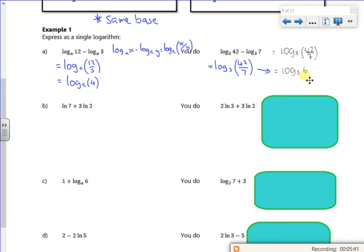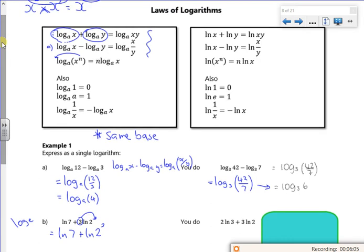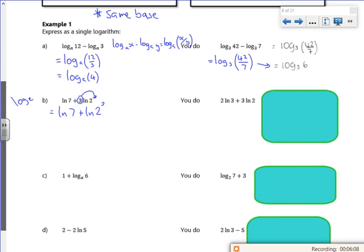As long as it's the same base, and ln is the same as log to base e, as long as it's the same base, that's fine. But what I want to do is, I want to get rid of this 3 here. I want to take it up there and use the power. So I've got log of 7 plus log of 2 cubed. So I'm using this one. Power up the front. So that's the same as log 7 plus log 8. Now because I'm adding my logs on the same base, I can multiply them together. So this becomes log of 7 times 8. So it becomes log of 56.